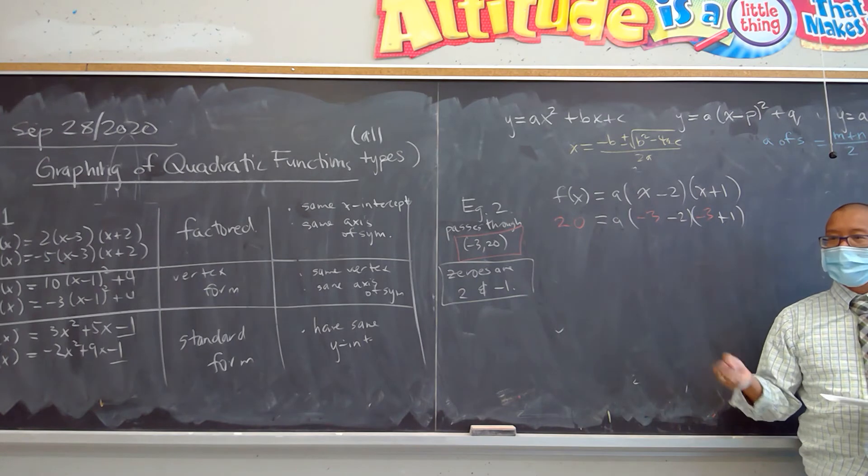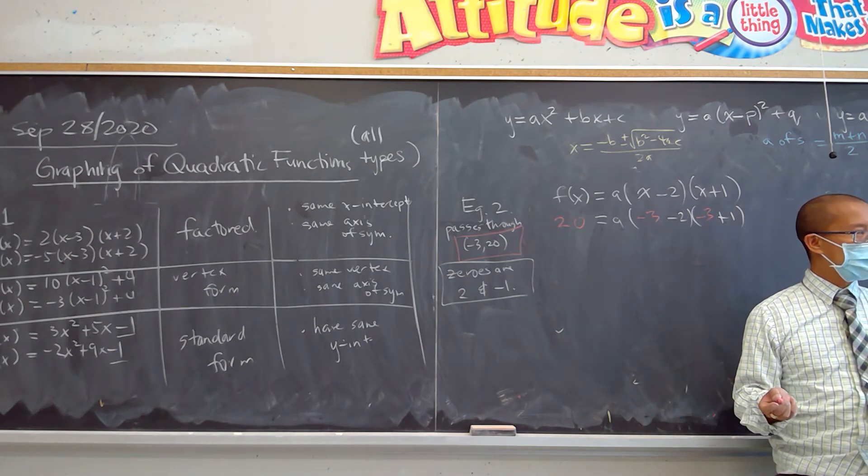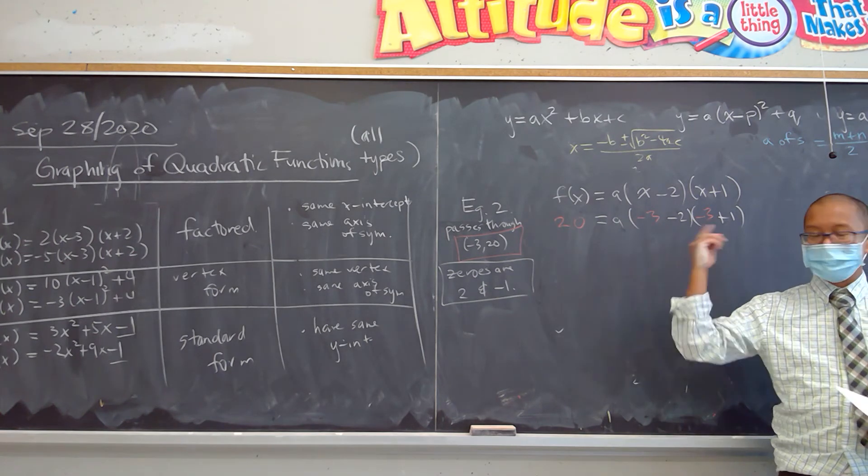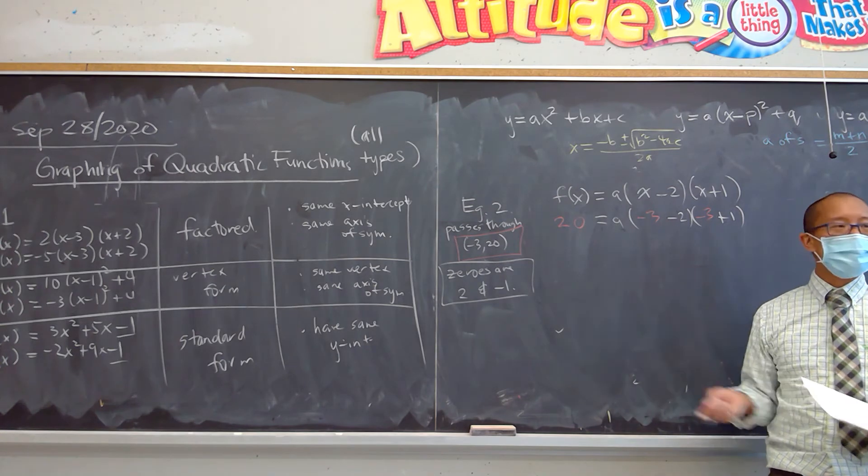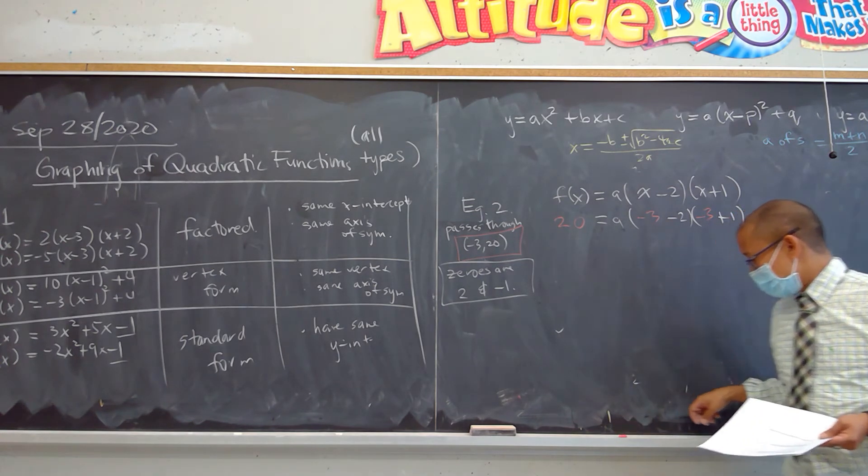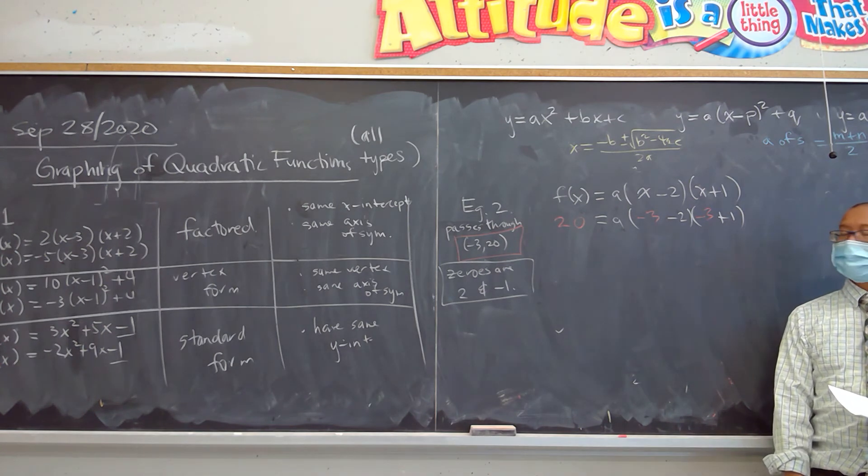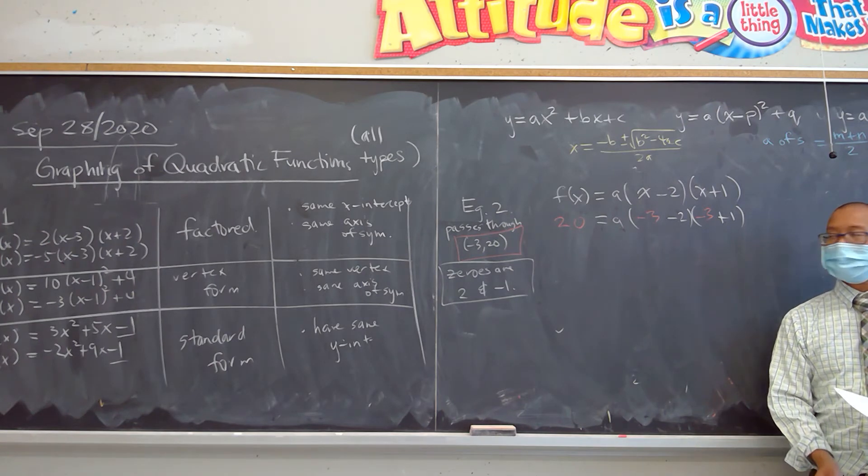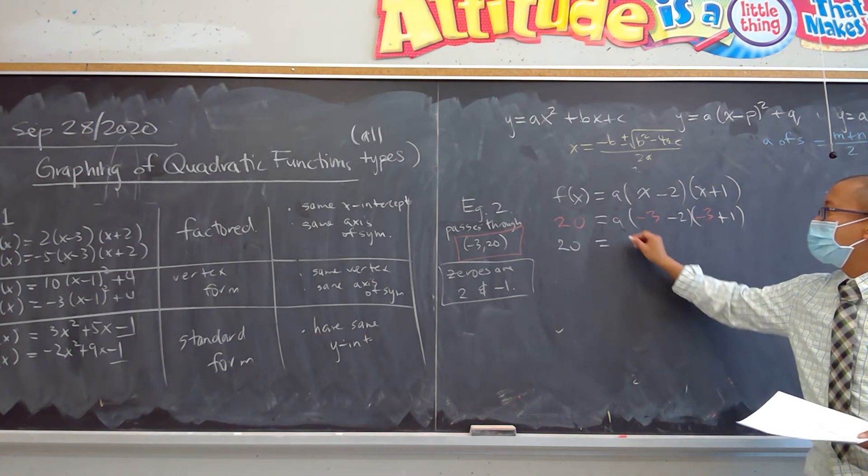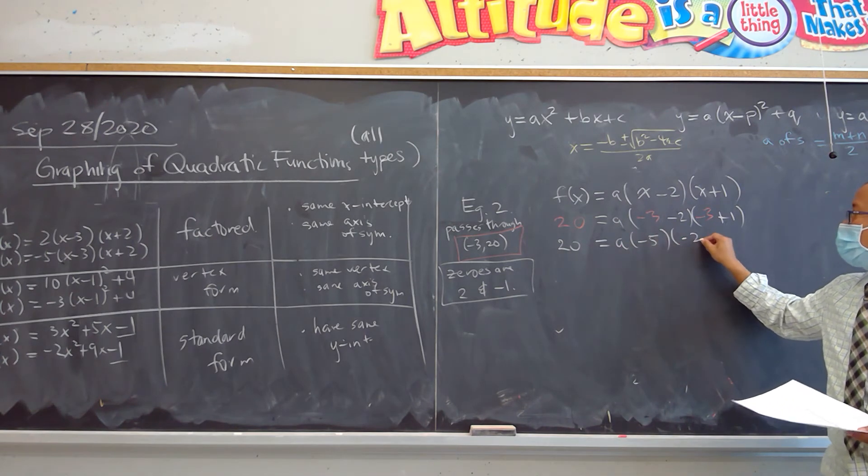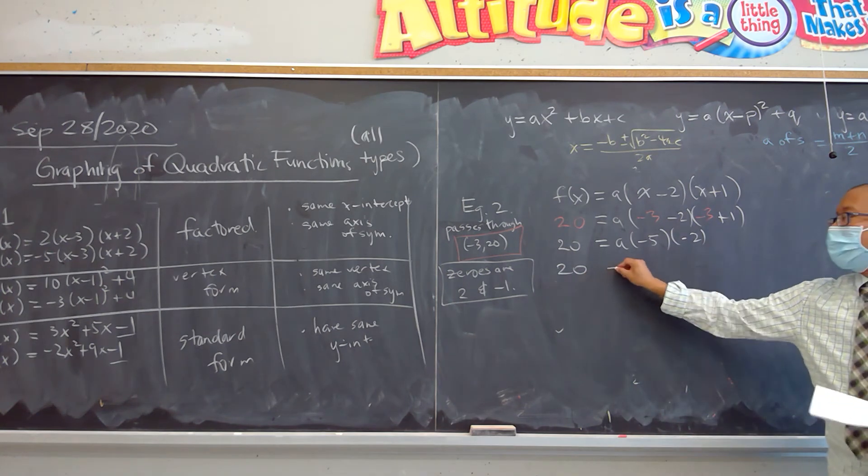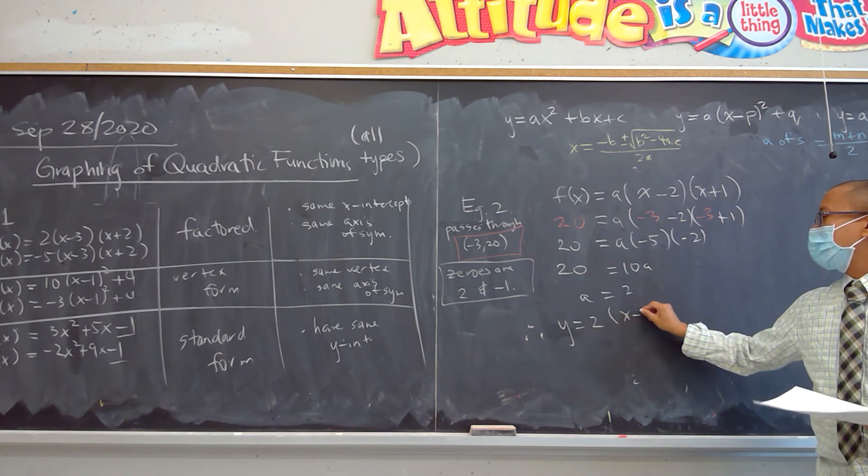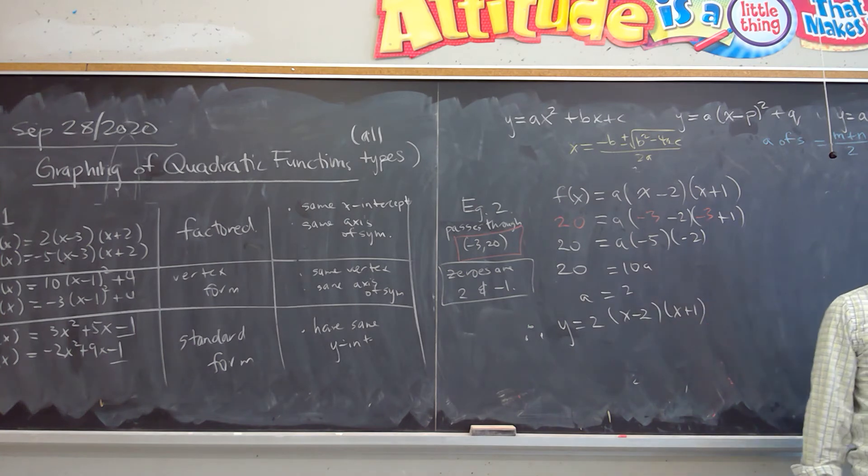Now notice this is factored form, and if they want the answer for example 2 in vertex form, we'll have to do some massaging, but I think we can do it. There's many ways of doing it. I think a lot of you realize there's too many variables here. You have the y value, or the f(x). You have an a and an x here. But a lot of you realize using this information, if this negative 3, 20 lies on this parabola, negative 3 is the x value and 20 is the y value.